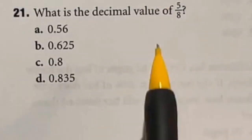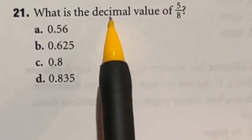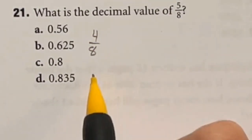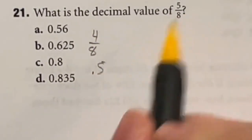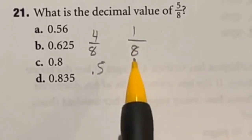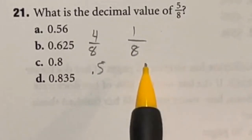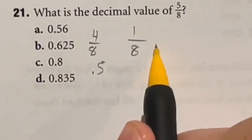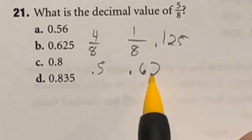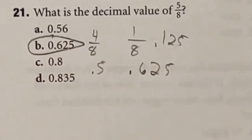So what is five eighths as a decimal? Well I know right off the bat that four over eight is going to be one half so 0.5. So that means I have one more out of eighth left. So looking at this how am I going to decide how much more this is? Well I know one fourth is 0.25 so half of that would be 0.125. If I add these two together I end up with 0.625 which is answer B.